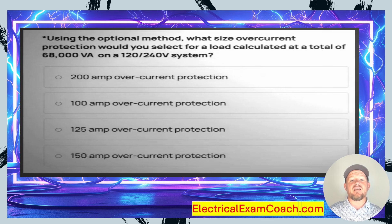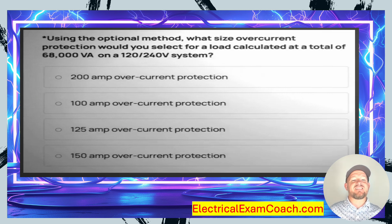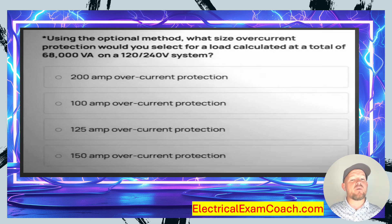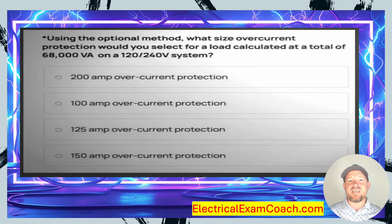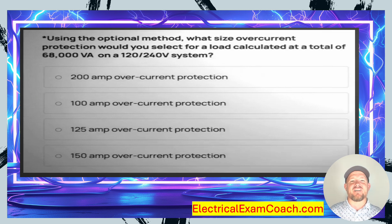Option B is 100 amp overcurrent protection. Option C is 125 amp overcurrent protection. Option D is 150 amp overcurrent protection.